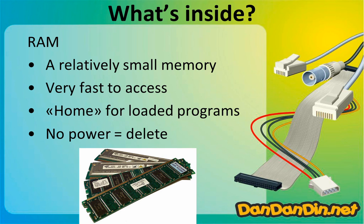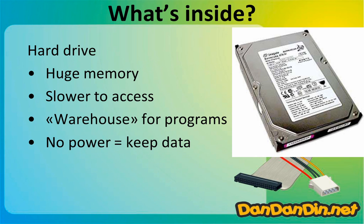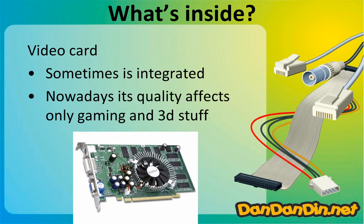The hard drive has a huge memory capacity and is cheaper, but it is slower to access. That's why when you turn on the computer it makes you wait a long time — because it is slow to read data. Since it is very large, it works like a warehouse for programs and code. When a program needs its code, it gets copied into RAM. Your pictures and videos are stored here because when the computer powers off, the data is kept.